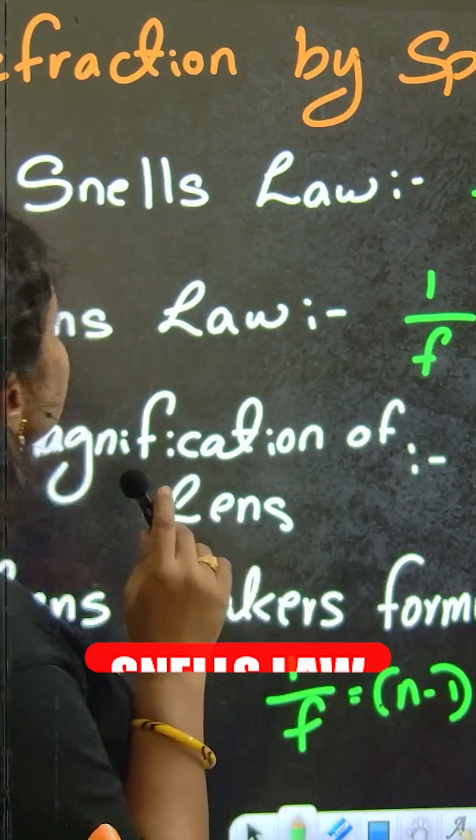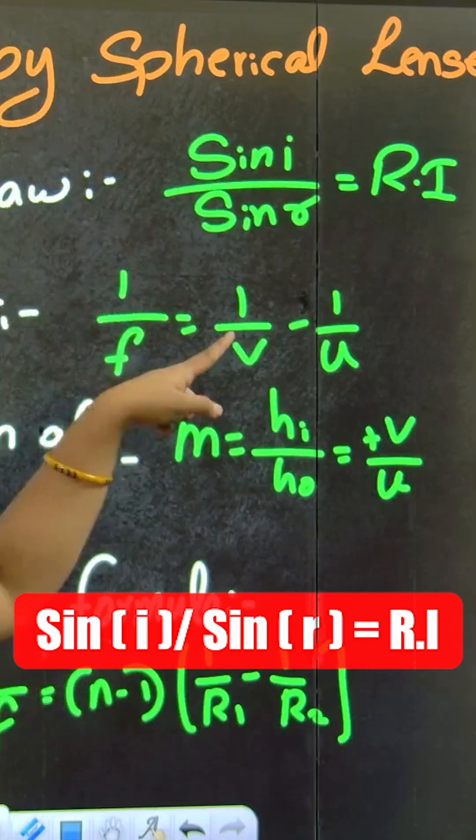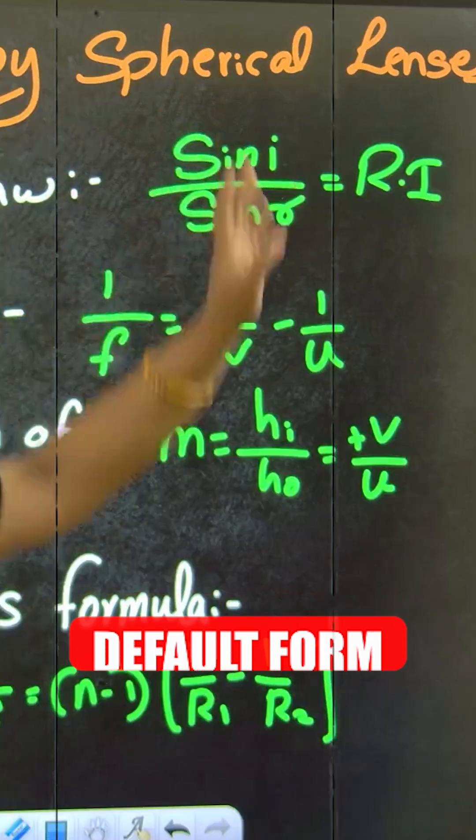So first one is Snell's law. What is Snell's law? Second law of refraction, that is sin i by sin r equals refractive index. It is a different form, but this is the default form.